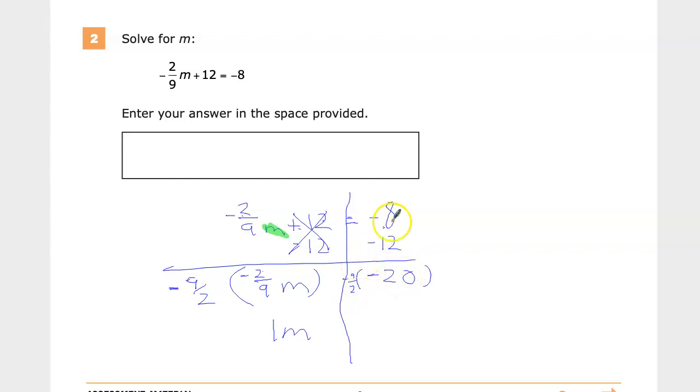So I know that 9 times 2 is 18. So 9 times 20 is 180. And the two negatives cancel each other out. That's very nice.